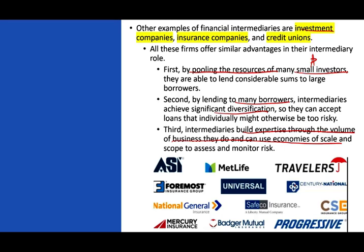Banks, investment companies, and insurance companies know a lot about what's going on in the economy before that information is public. For example, if you work at a bank and notice that mortgage delinquencies are rising from 3% to 4%, you immediately know something is happening in the economy. This expertise creates opportunities for institutions to share insights with investors through newsletters, research notes, and databases.